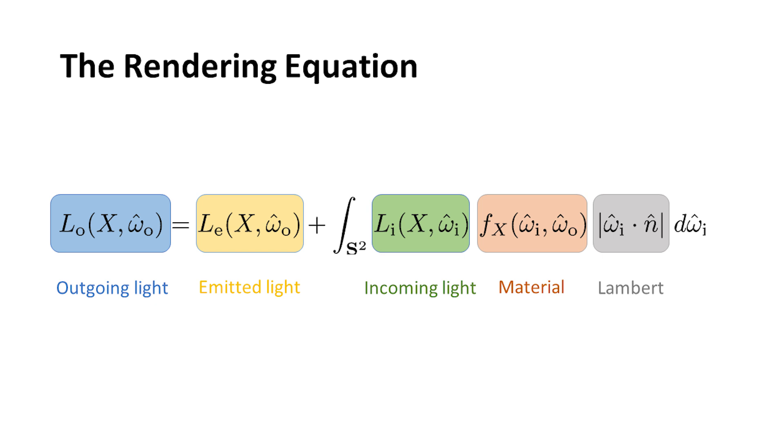The terms in this equation—the first two are really easy. The outgoing light on the far left basically says, given a point and an outgoing direction, what light do I see? To start with, there's the emitted light. If you have a light source, a lot of light is coming out from there, and that just shines right into your eye. If everything in the world was a light source, we'd be done.